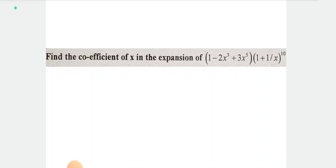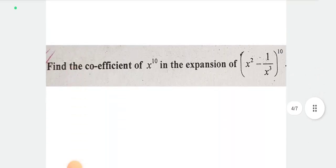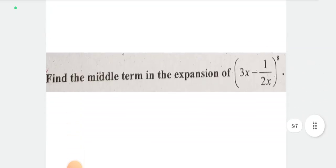We have 1 minus 2x cubed plus 3x to the power 5, into 1 plus 1 by x, whole to the power 10. Expand 1 plus 1 by x whole to the power 10. Find the coefficient of x to the power 10 and x to the power 7. We find the coefficient of x to the power 10 and x to the power 7 accordingly.